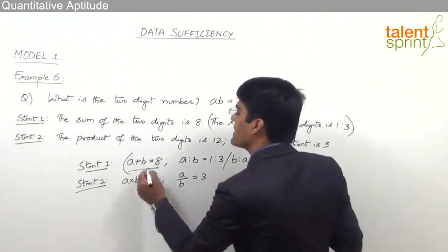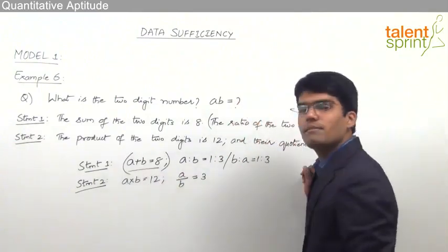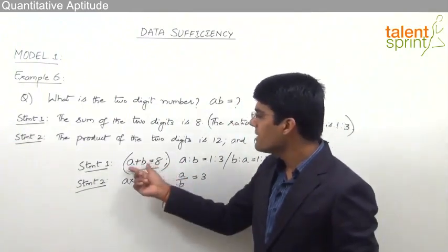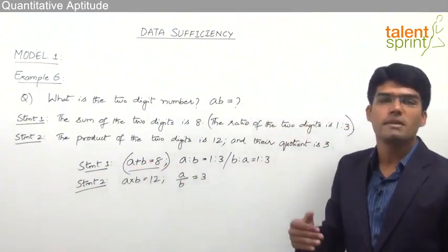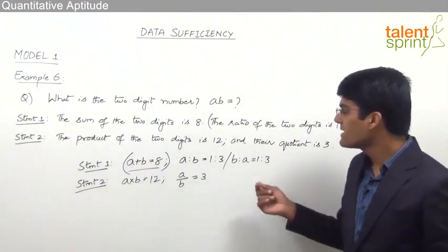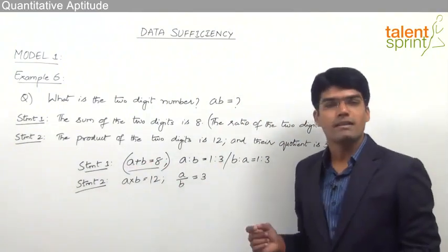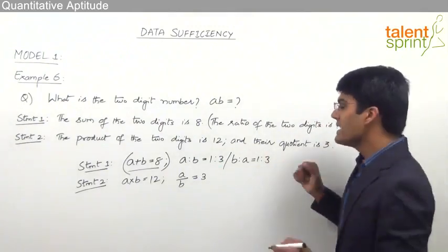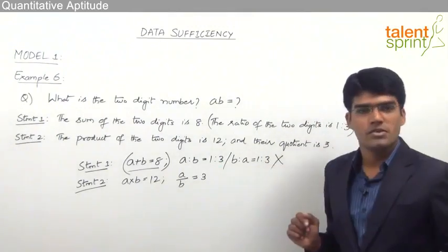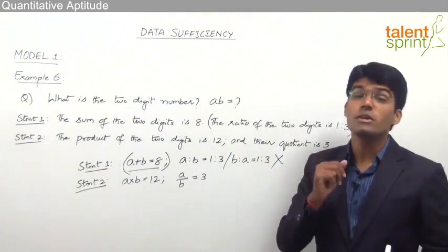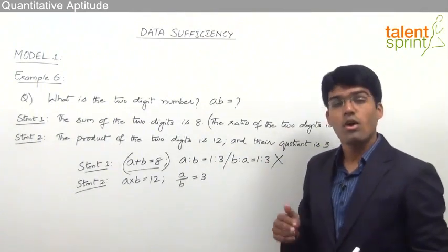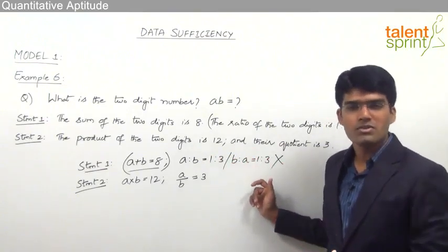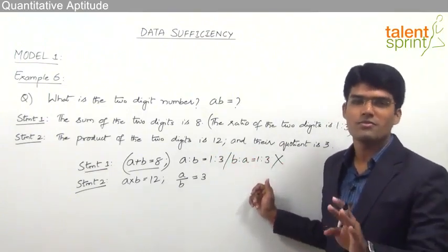With respect to the first part of Statement 1 — A plus B equals 8 — there is no problem, since A plus B equals B plus A. But the problem is in the second part, the ratio. So we can say that Statement 1 alone is not sufficient to answer the question, as we are getting two different answers.